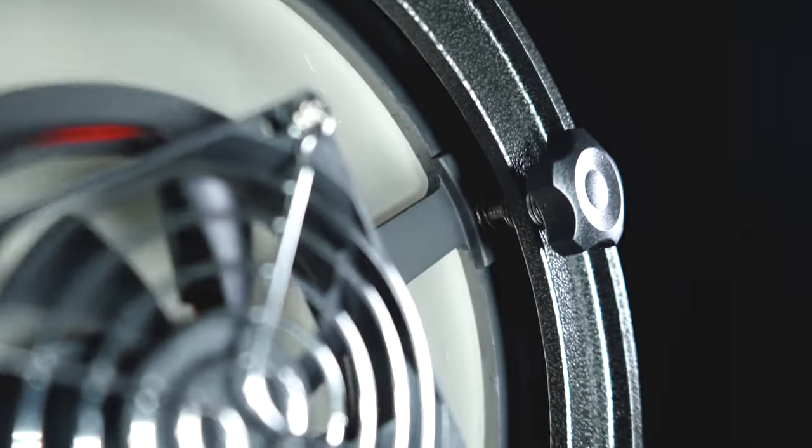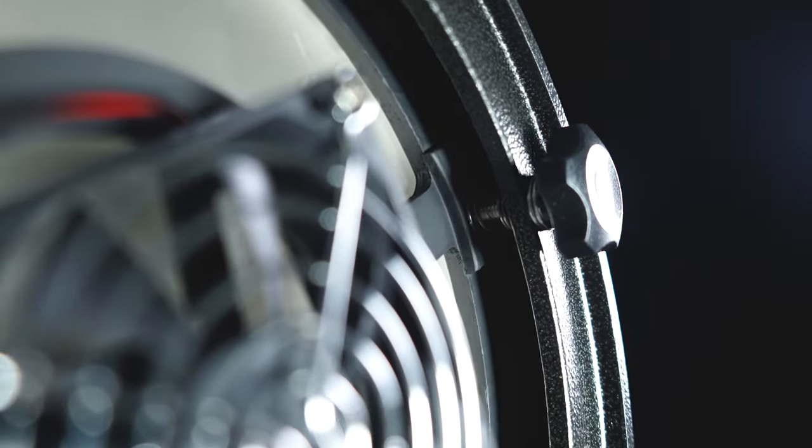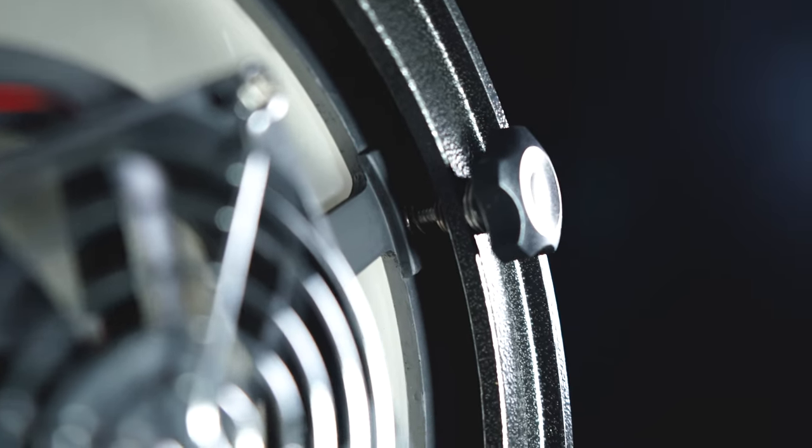And lastly, we have the collimation springs. The primary mirror cell holds the primary mirror and it uses springs to support the weight and it allows for adjustments. Now upgrading these springs keeps the mirror positioned correctly during and after the collimation process.